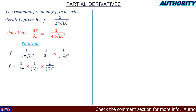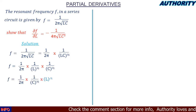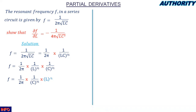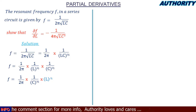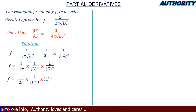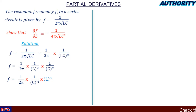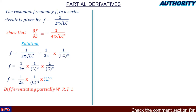Since we are differentiating with respect to L, we rewrite 1/L^(1/2) as L^(−1/2). So the expression becomes (1 / 2π) × (1 / C^(1/2)) × L^(−1/2). This is the standard form we will differentiate.